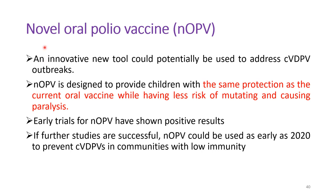Novel oral polio vaccine is an innovative new tool that could potentially be used to address circulating vaccine-derived polio virus outbreaks. It is designed to provide children with the same protection as the current oral polio vaccine while having less risk of mutation and causing paralysis. Early trials of novel oral polio vaccine have shown positive results.